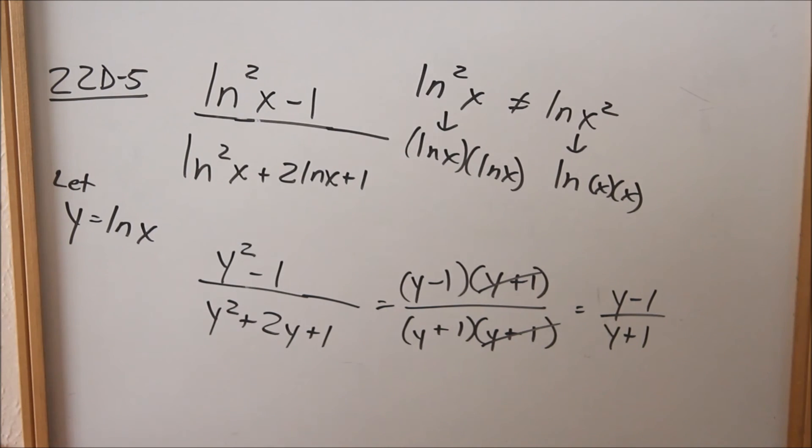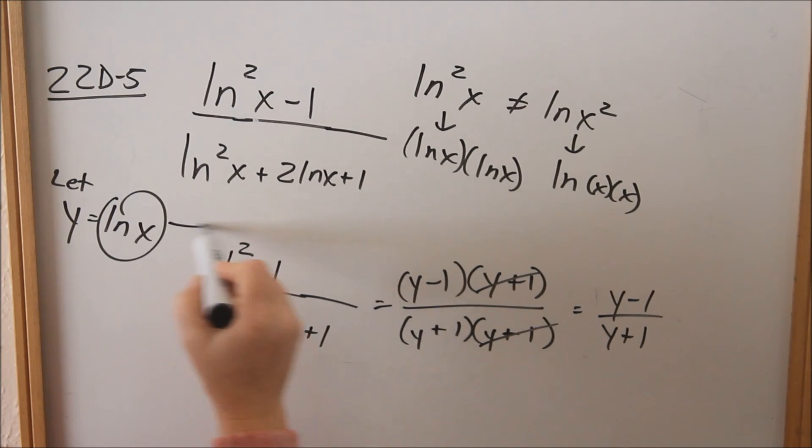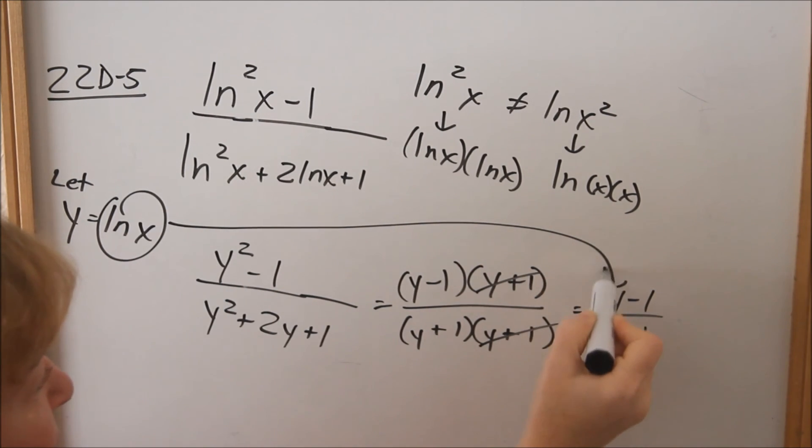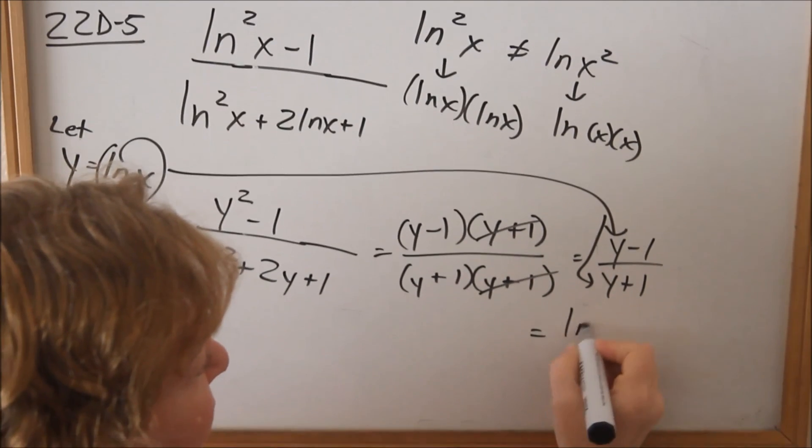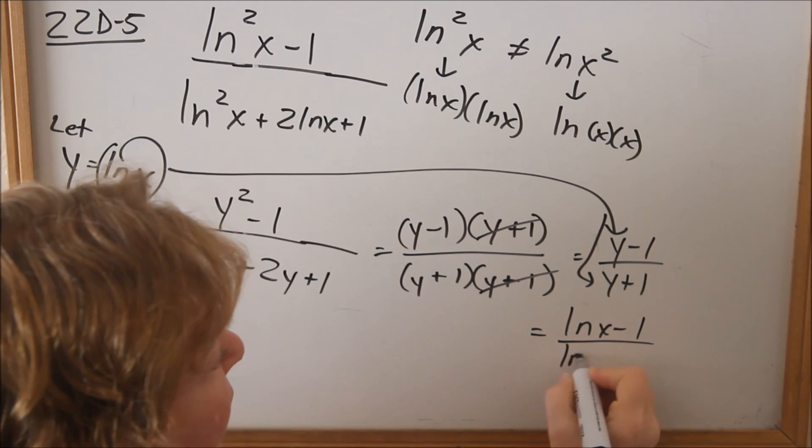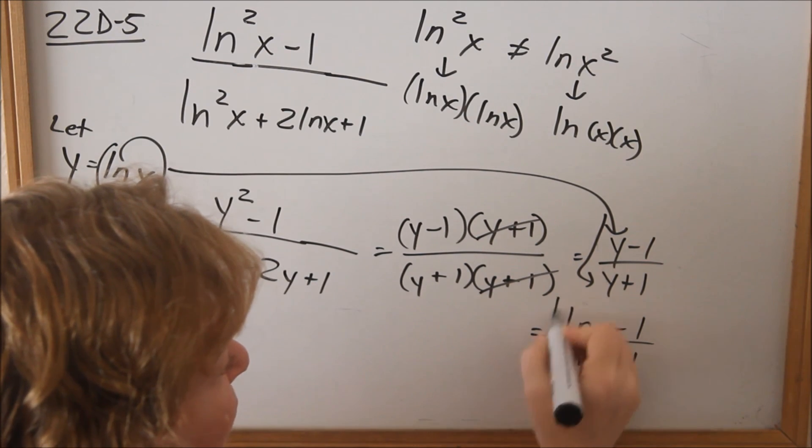We're not done. We have to go back and make the substitution and take ln x and put it in everywhere we see a y for the final answer. So now we can say (ln x - 1)/(ln x + 1). That would be the final answer.